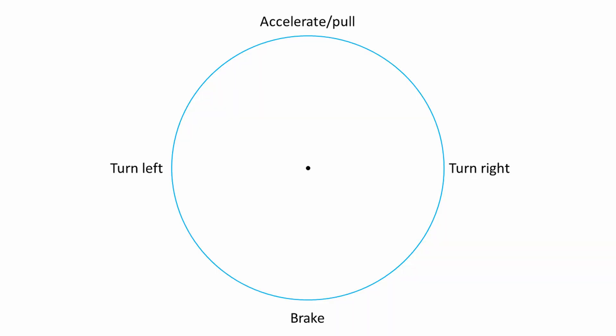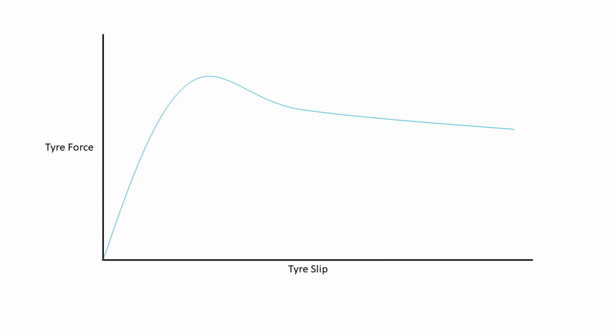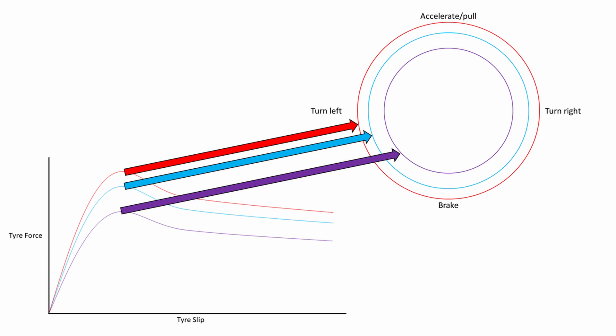We can change the size of the friction circle by changing the amount of load the tyre is carrying. If we increase the load on the tyre, the friction circle gets bigger, meaning we can get more pull or more braking force. However, the change in size of the friction circle is not linear with load. Adding about 20% load moves the slip pull curve up a bit, but removing 20% from the normally laden condition drops it down by more than it went up when we added 20%.